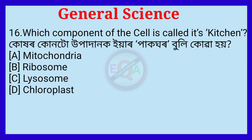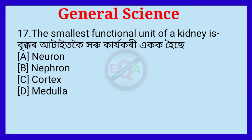Question number sixteen. Which component of the cell is called its kitchen? Question number seventeen. The smallest functional unit of a kidney is? The correct option is Option B: Nephron.